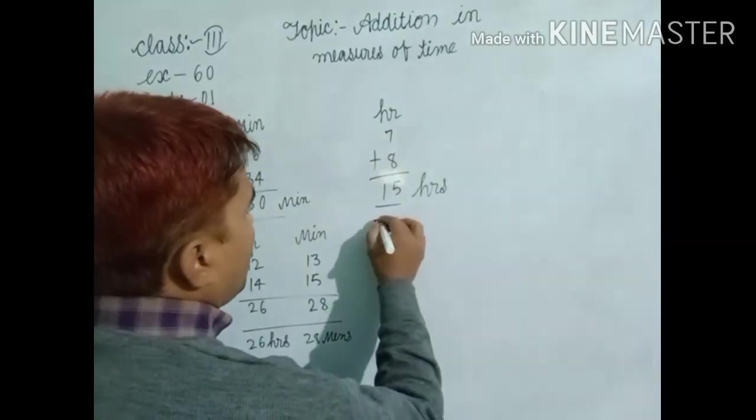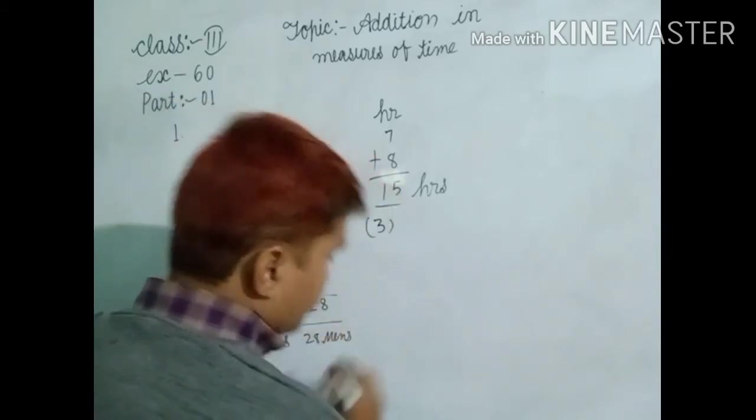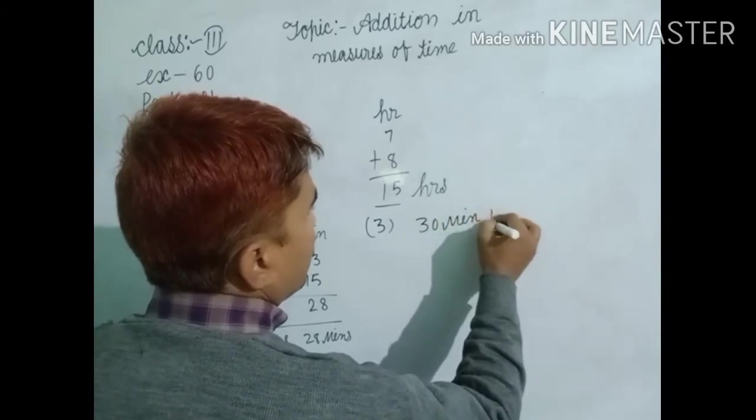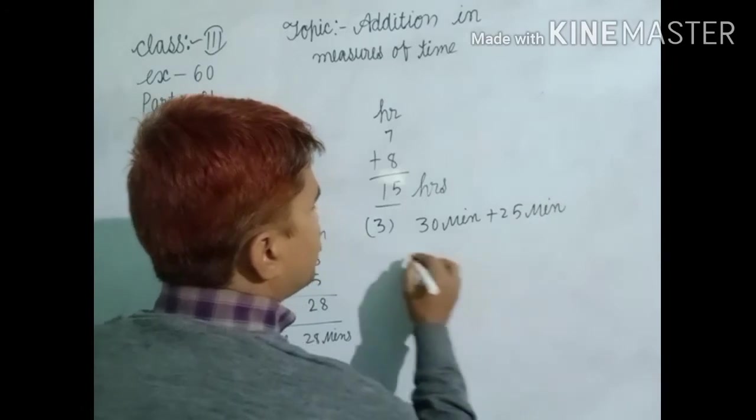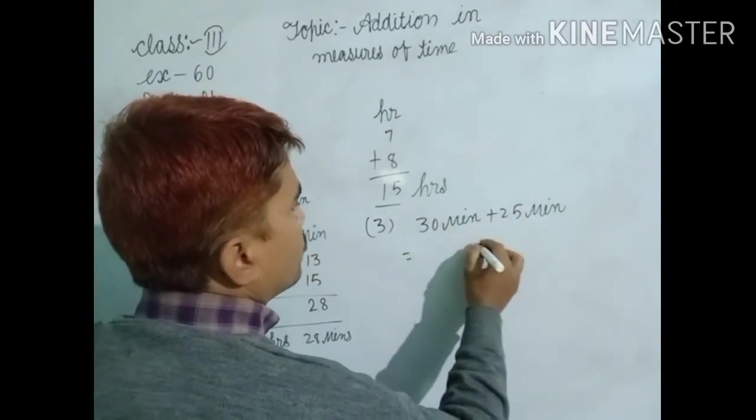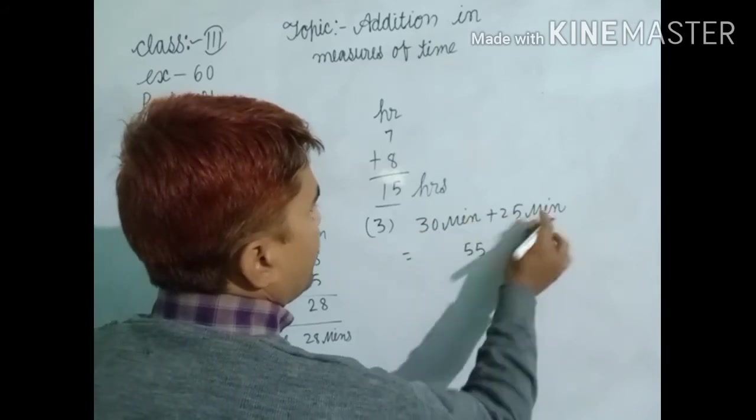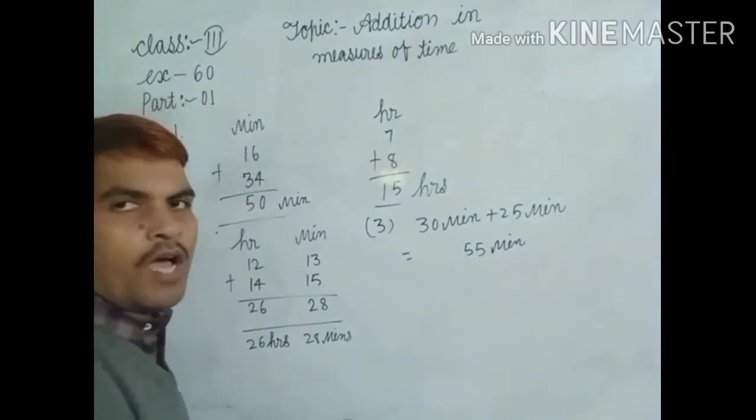Now, third question. Find 30 minutes plus 25 minutes. Dear students, 5 plus 0, 5. 2 plus 3, 5. And here write down minute. So common minute. That is your answer.